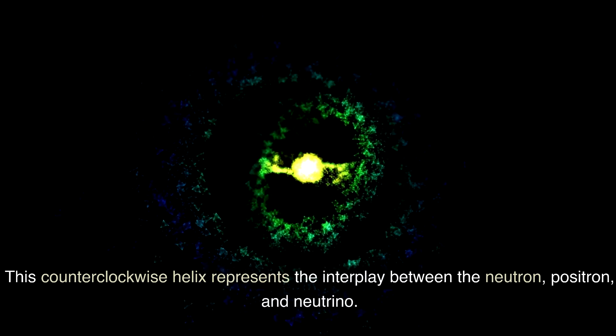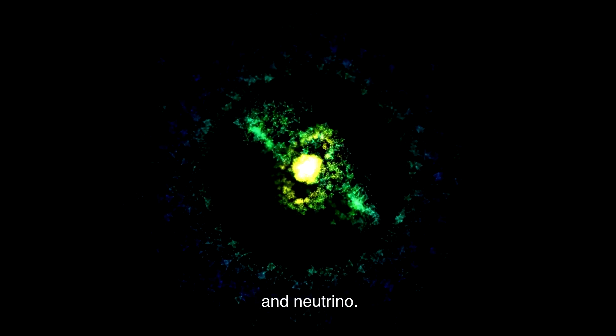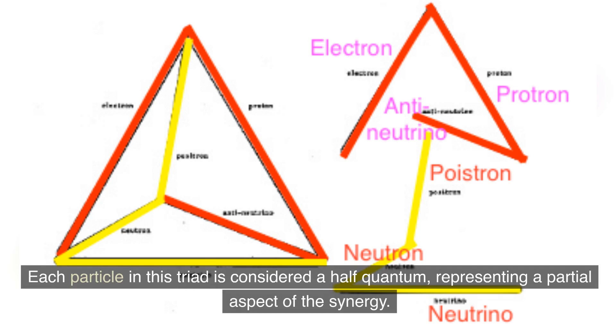This counterclockwise helix represents the interplay between the neutron, positron, and neutrino. Each particle in this triad is considered a half quantum.